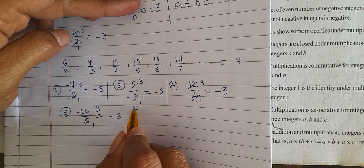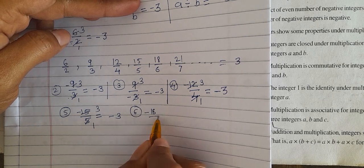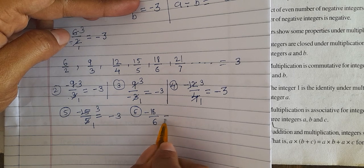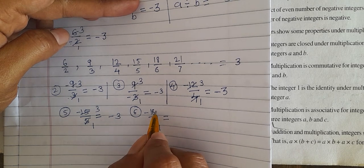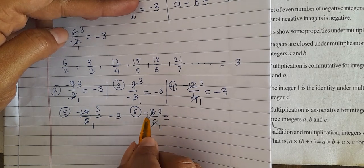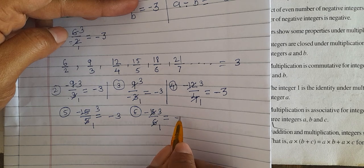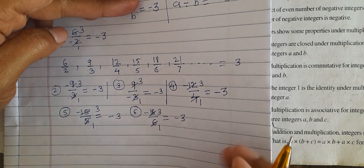Minus 18 divided by 6 is equal to 6 times 3 is 18, but with minus and plus, the answer is minus 3.